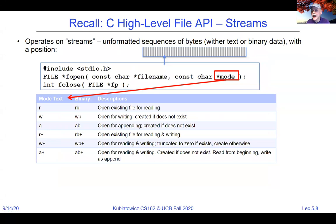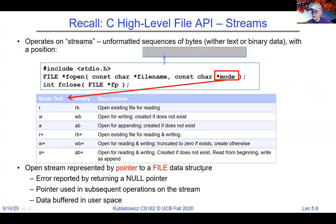We talked about both high-level and low-level APIs for file data. High-level streams have an F in front of them — fopen, fclose, fread, fwrite — and when they return they give a pointer to a file data structure. That structure confirms the file was successfully opened. An error is returned with a null file pointer. You use that pointer for all subsequent operations. Data in high-level streams are buffered in user space in addition to the kernel.